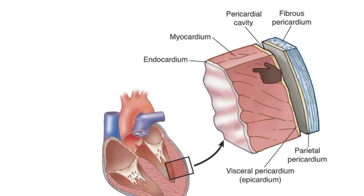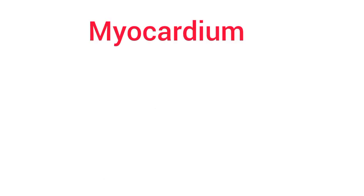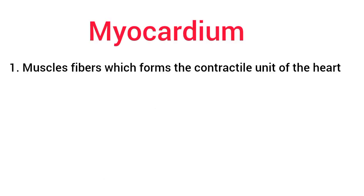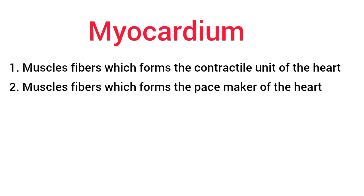The myocardium is the middle layer of the wall of the heart and is formed by cardiac muscle fibers or cardiac myocytes. The myocardium forms the bulk of the heart and is responsible for the pumping actions of the heart. Unlike skeletal muscles, the cardiac muscle fibers are involuntary in nature. The myocardium has three types of muscle fibers: those which form the contractile units, those which form the pacemaker, and those which form the conductive system.